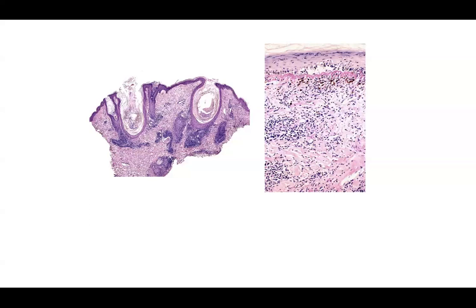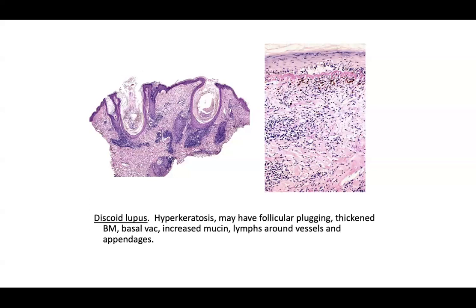The diagnosis is discoid lupus. Clinically and histologically you'll want to see hyperkeratosis with follicular plugging. In classic examples you can appreciate areas that look to be thickened in terms of the basement membrane material with overlying basal vacuolar change, increased dermal mucin, and perivascular and peri-adnexal lymphocytic inflammation.